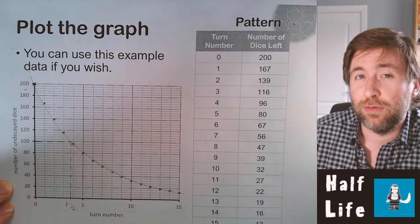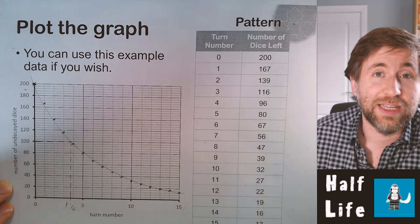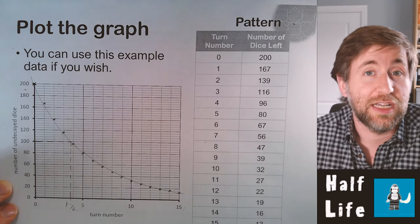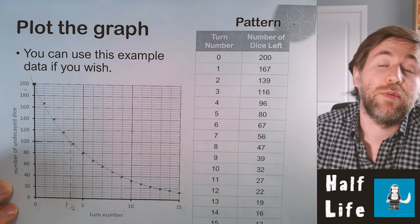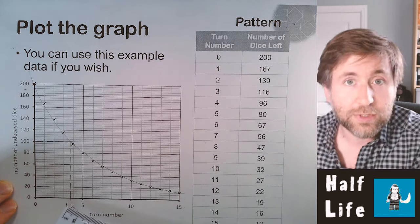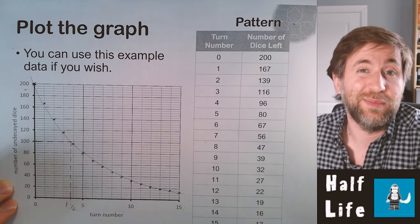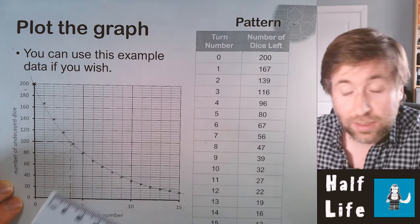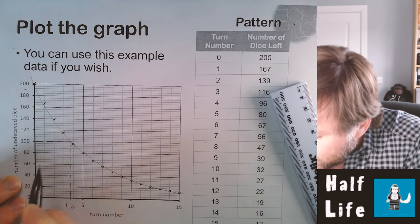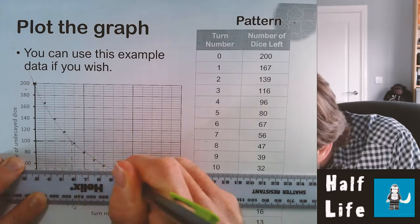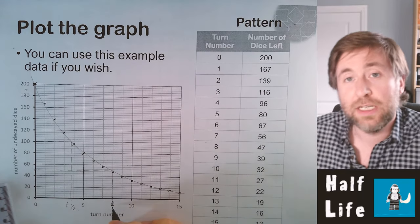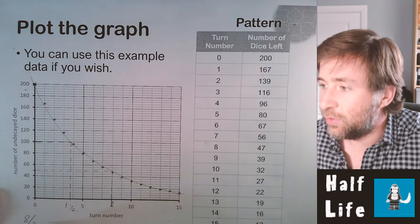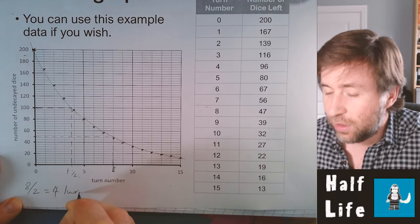The half-life should come out at exactly turn 4, because the probability of getting a six on a die is one sixth. In this model, a die decays whenever it scores a six. It doesn't come out at exactly turn 4 every time because half-life is random. To confirm, halve again: half of 100 is 50, which falls at turn 8 — the second half-life. So on average, 8 divided by 2 gives 4 turns as the half-life.